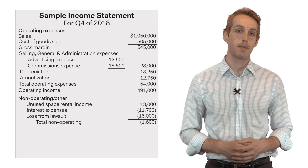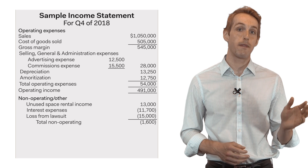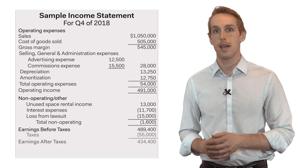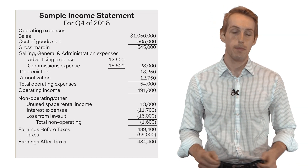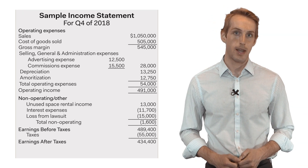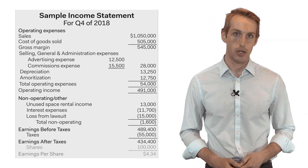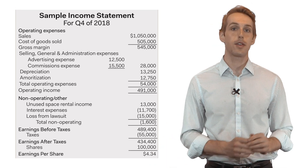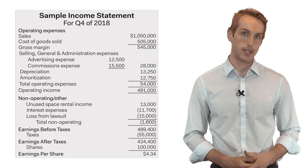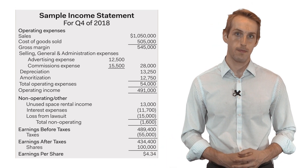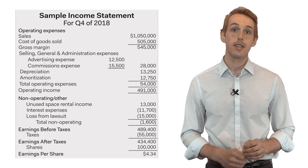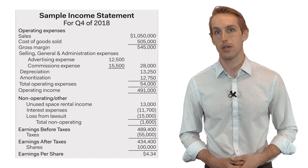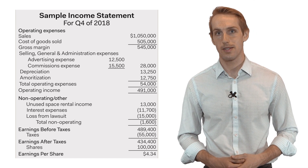Beneath this is a company's earnings both before and after taxes, and at the very bottom of the income statement is earnings per share, which is a company's net income divided by the total number of outstanding shares. This lets the shareholder know what their portion of net income is.